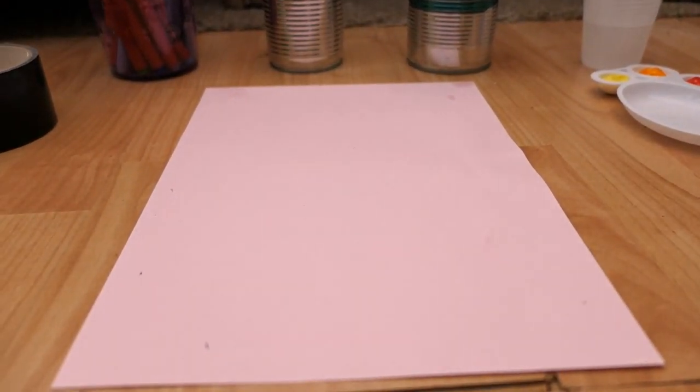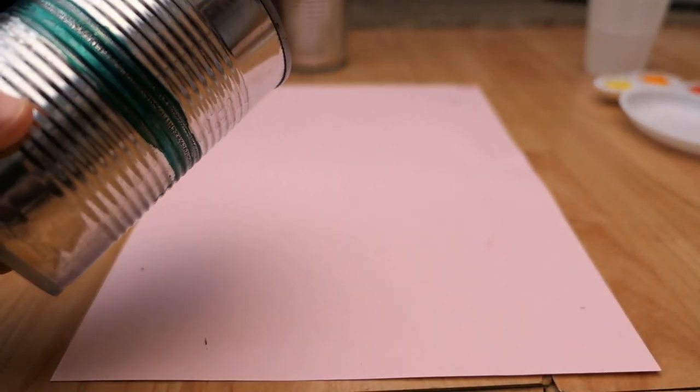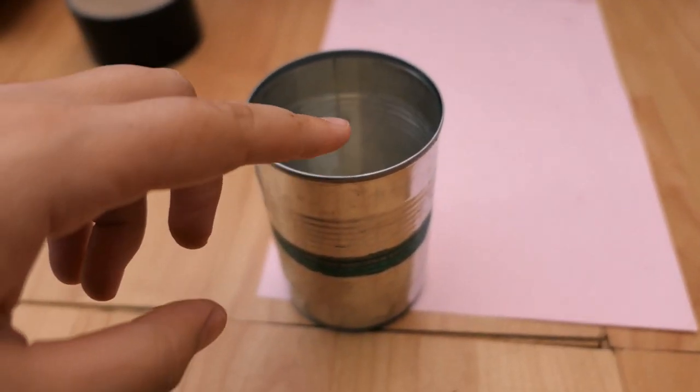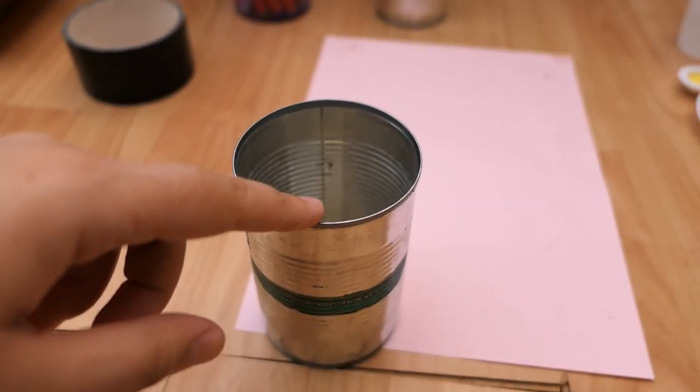So if you want to get an empty tin like this, just be careful because they sometimes have sharp bits at the top where it's been peeled.